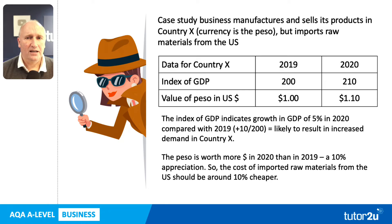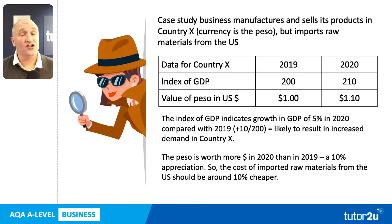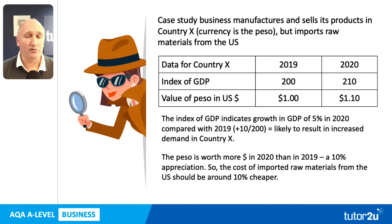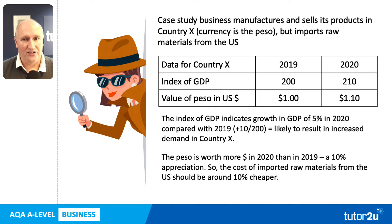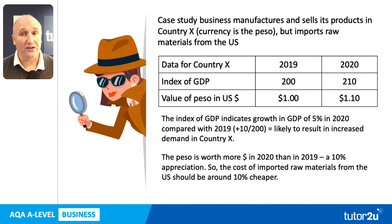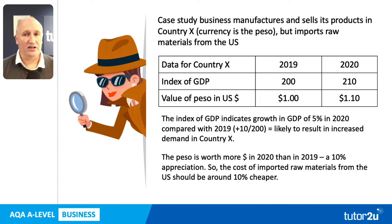Let's deal with the index first. Index numbers are an examiner favourite — they show the percentage change from a base period. With 2019 as the base at 200, the index number has gone up by 10 in 2020, which is a 5% increase. That suggests GDP has grown by 5% in 2020 compared with 2019, indicating increased demand for products in country X, which we can use to explain how that might impact profit.